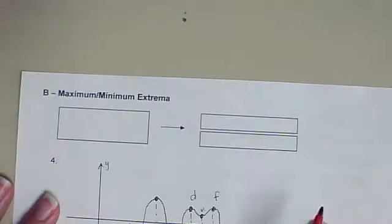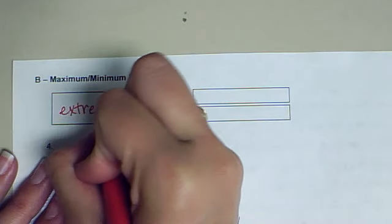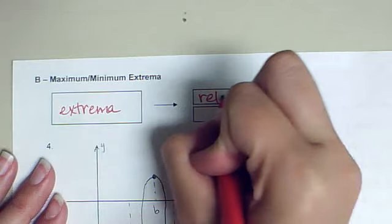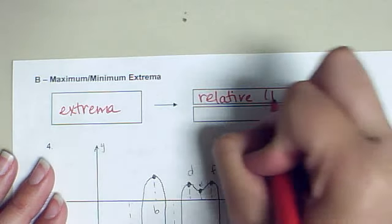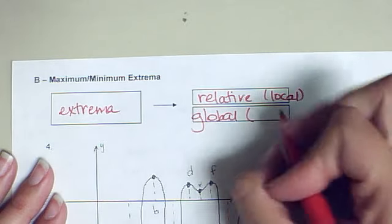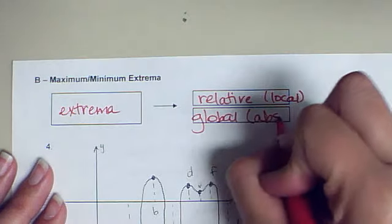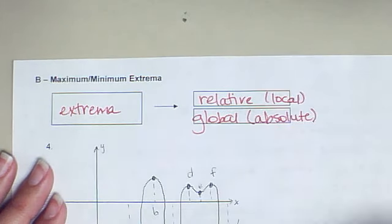On the flip side, we talked about extrema. Extrema have two different types. They have a relative, which is also called a local extrema, and they have a global, which is also called an absolute max or min.